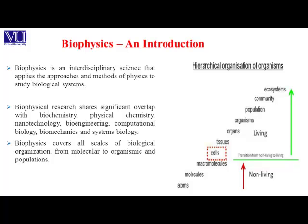Like we have a number of systems in our body: the neuronal system, circulatory system, respiratory system, and excretory system — they together make up an organism. Organisms join to form a population, and further, community and ecosystems are developed. So biophysics is applicable not only at the lowest level, like the atomic level, or the highest level, like the ecosystem level — it is equally applicable on all the steps.